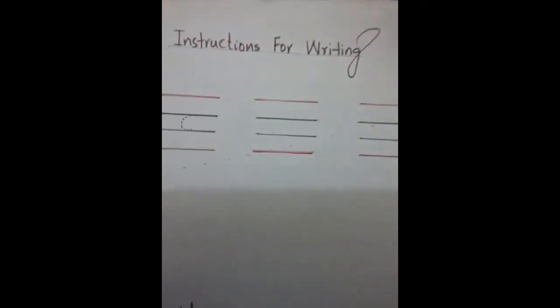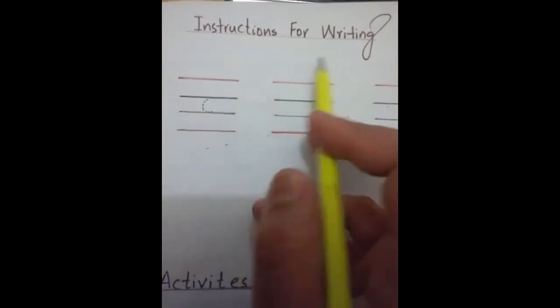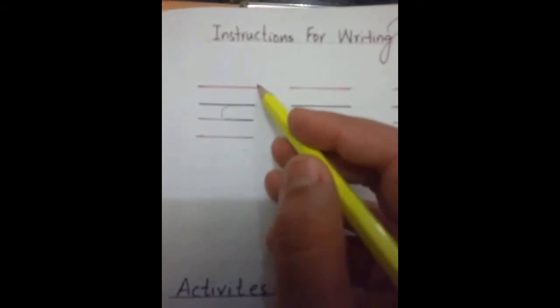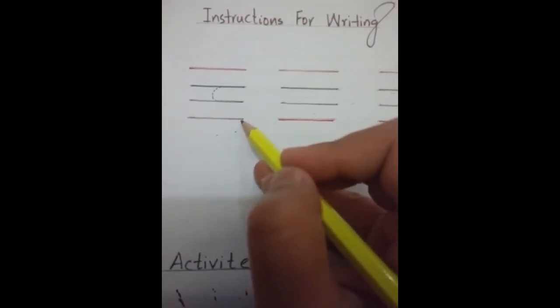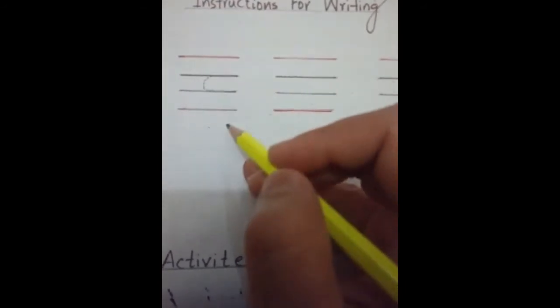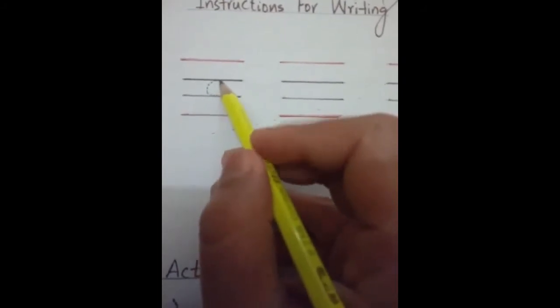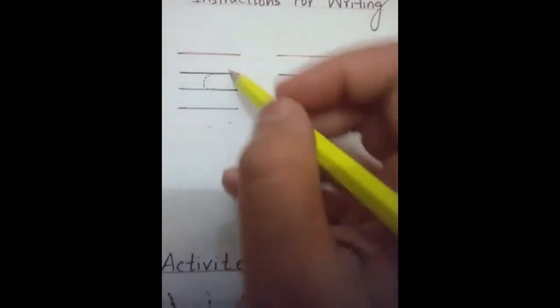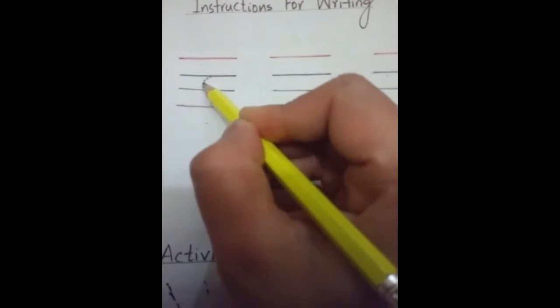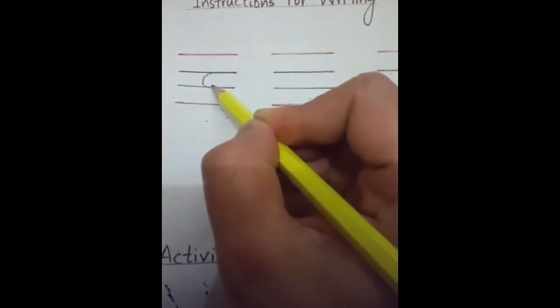Now we will do the next part — the second part. It's related to instruction for writing. Do you know about this? This is a line pattern: top line, middle line, baseline, and lower line. Now how will you write letter C on this line pattern? Here you can see this letter in dots form. Now I will trace this letter for small c.